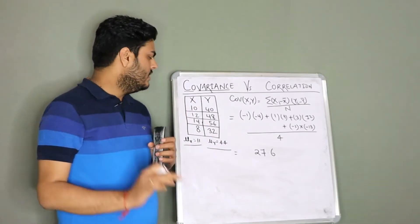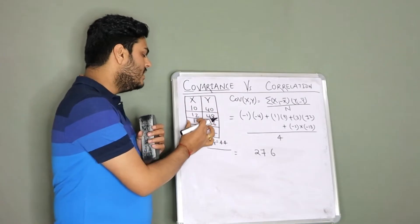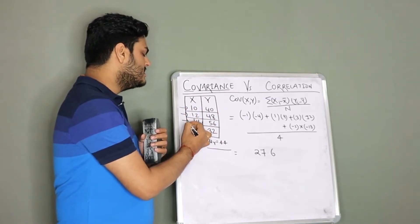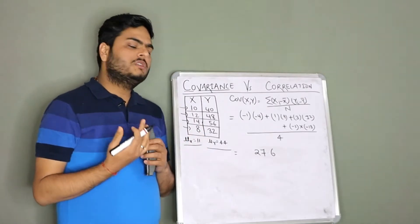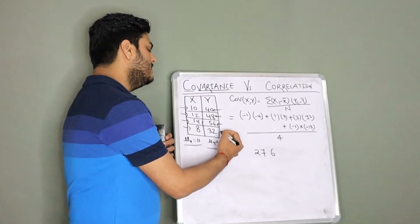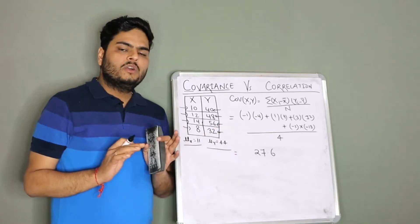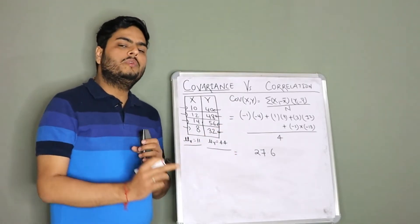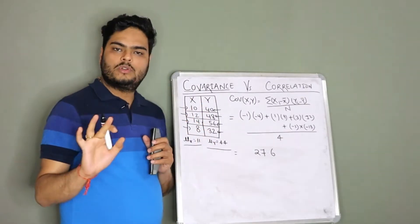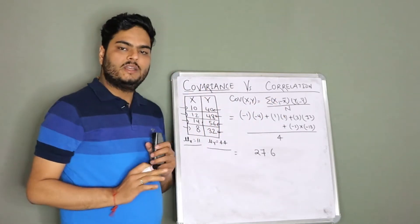Again, you can take the same example: number of hours you spend in a week on Netflix, let's say variable x, and how many hours you sleep, let's say variable y, in a week. These two variables, we will calculate the covariance of these two variables. What is the mean of x? 11. Mean of y? 44. Let us plug in the values.